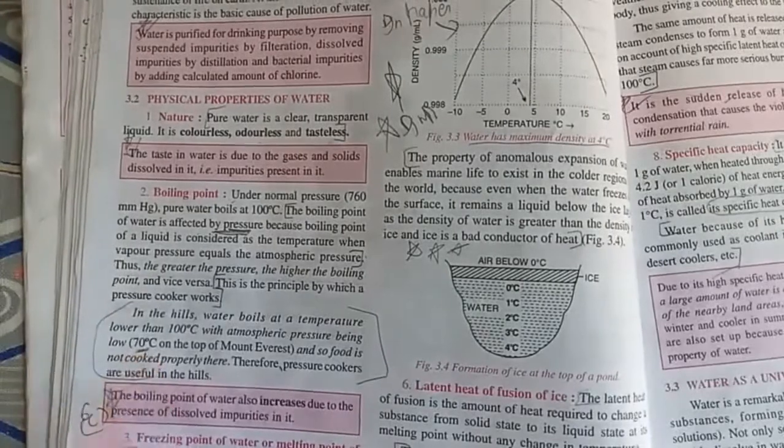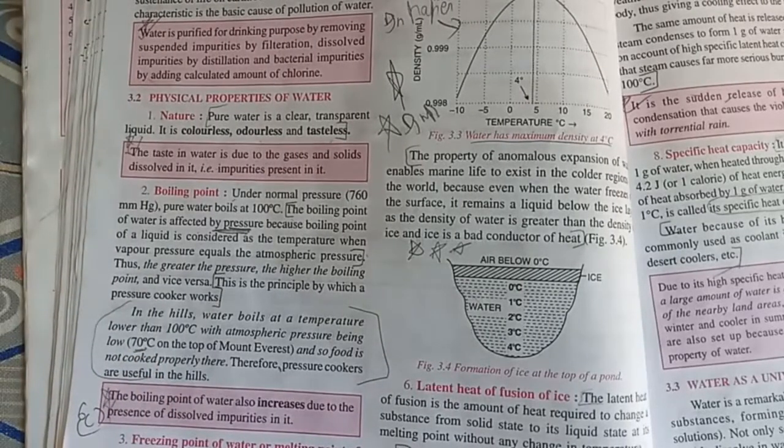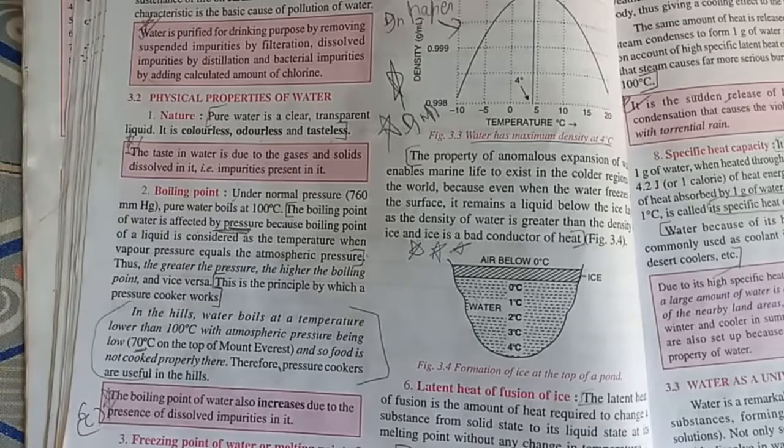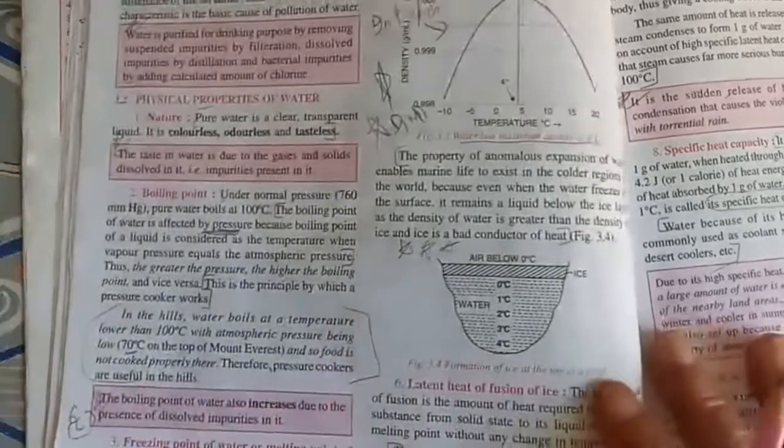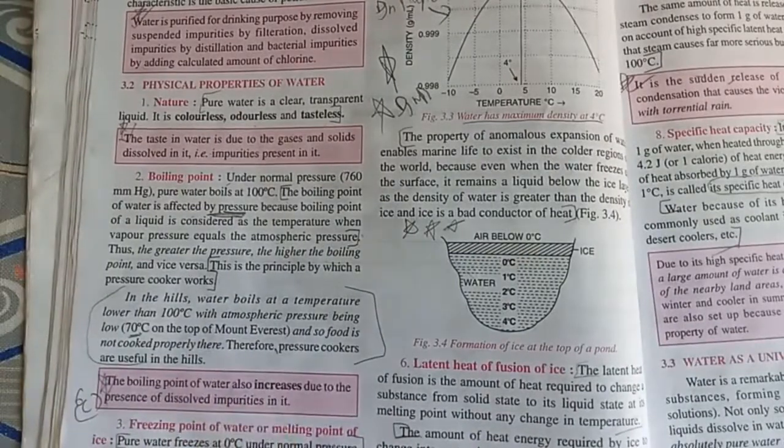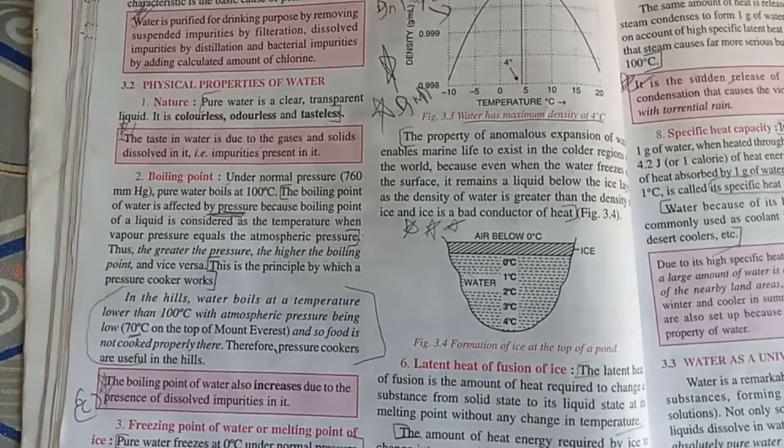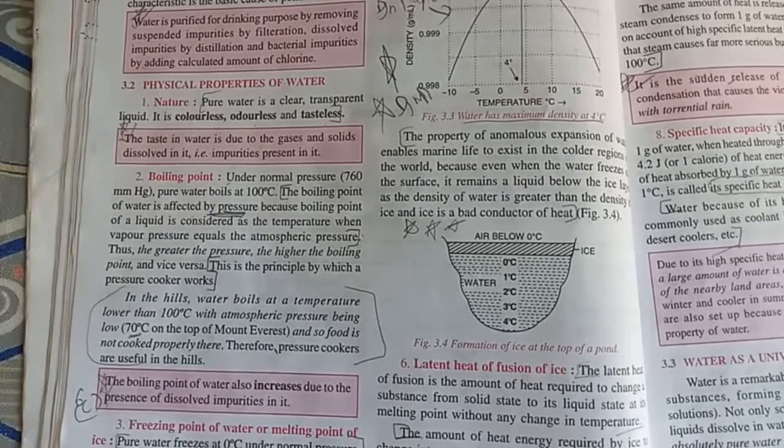At high altitudes we use pressure cookers. The boiling point of water also increases due to the presence of dissolved impurities.